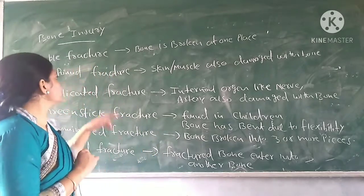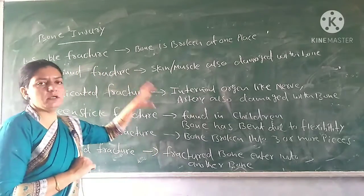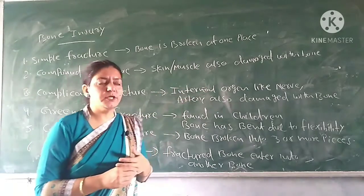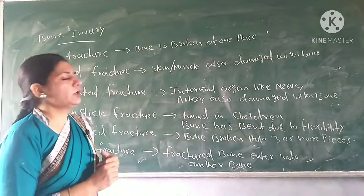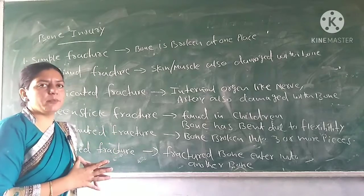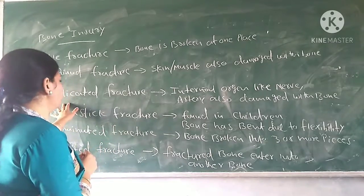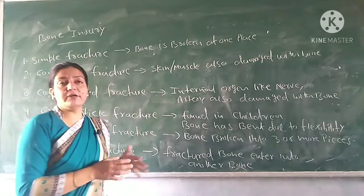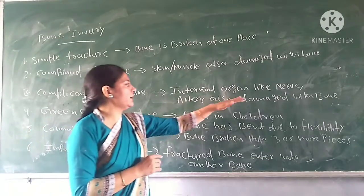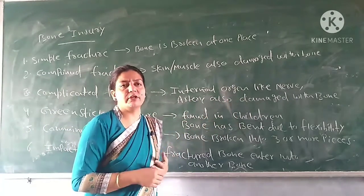The second type is a compound fracture, where the bone fractures and also damages surrounding tissue, with the bone visible externally. Third is a complicated fracture. In a complicated fracture, internal organs like nerves and arteries are also damaged by the bone fracture.